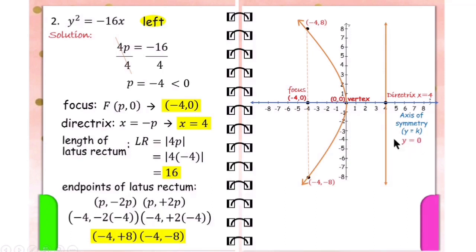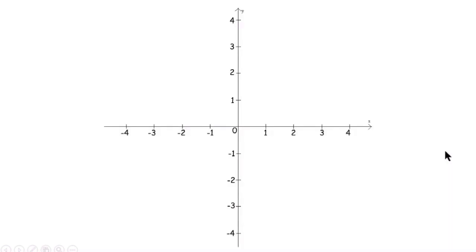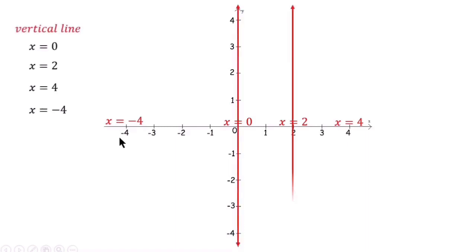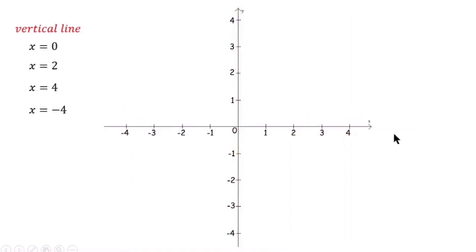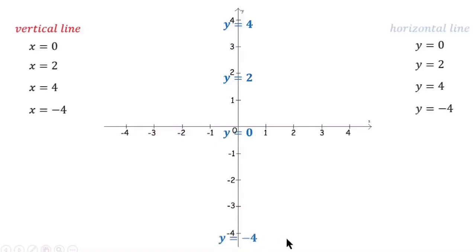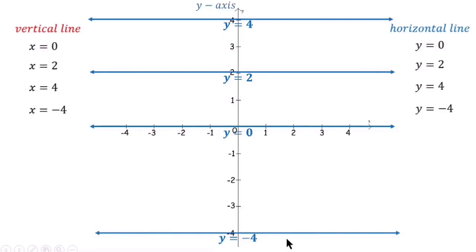As you can observe, when the directrix is vertical, the axis of symmetry is horizontal. When the equation of the directrix is in terms of x, the axis of symmetry is in terms of y, and vice versa. Remember: if you have x equals a number, the graph is a vertical line and you locate the value along the x-axis. But if y equals a number, the graph is a horizontal line and the values are found along the y-axis.